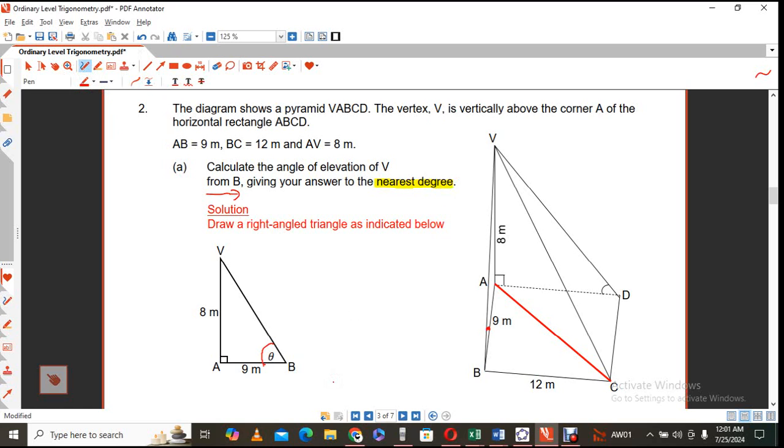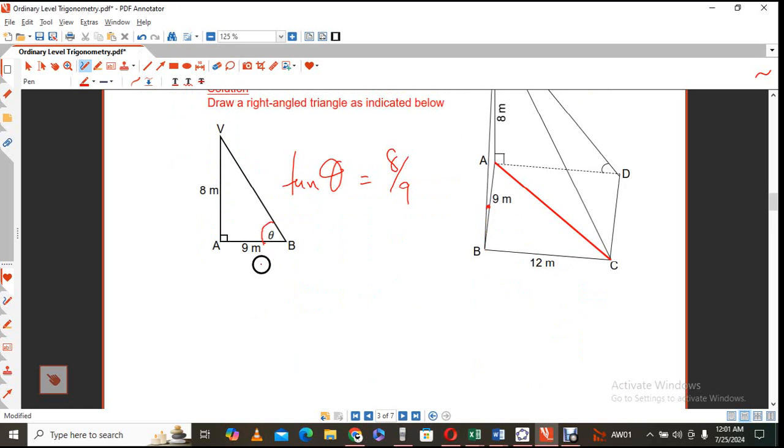So again, similarly, we are using tangent. So tangent theta is equal to whatever is opposite over whatever is adjacent. So that means that we will calculate this angle by saying the inverse tangent. Because when you calculate the angle, this is what you do.